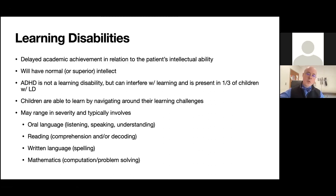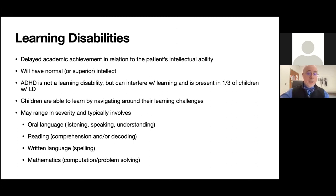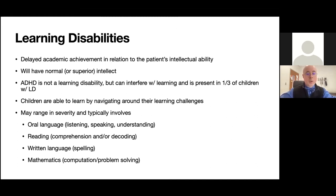These children, since they have normal intellect, can overcome and navigate around their learning challenges by receiving appropriate therapies, services, tutoring, and educational programs. These can range in severity but typically involve four types: oral language (listening, speaking, understanding), reading comprehension and decoding (probably the most common), written language and spelling, and mathematics including computation and problem solving.